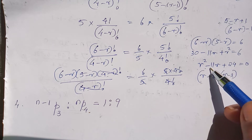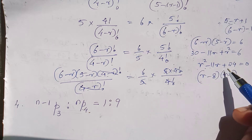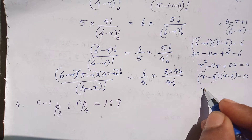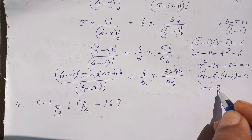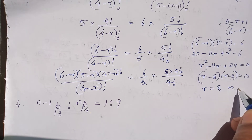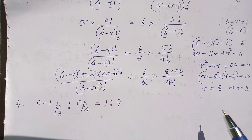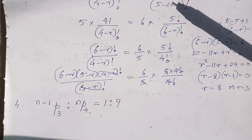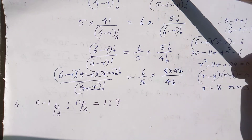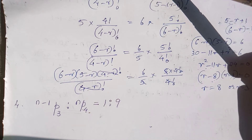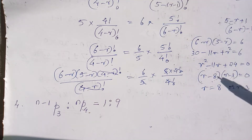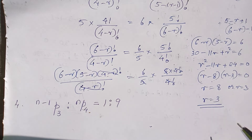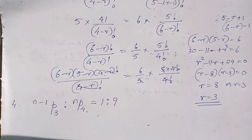Solving the equation, we find r is around 3. Testing values: r equals 0, r equals 2, r equals 3. Evaluating, R equals 3 is the final answer.